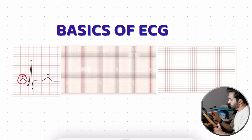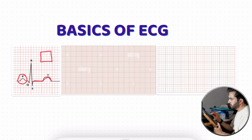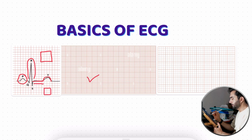First, let's understand what ECG waves and segments are, and how they are plotted on ECG paper. You need to remember the height and width of the waves and segments. It is very important to understand the ECG paper and its boxes — both the real ECG paper and the blank ECG paper.